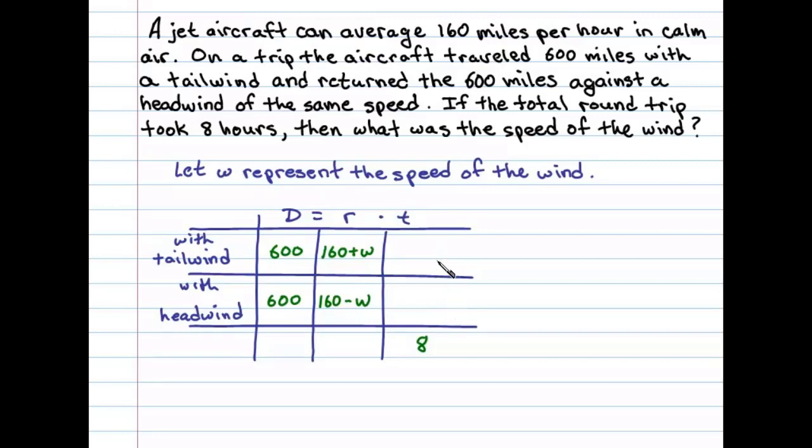Now, to get these times, we'll use the fact that distance equals rate times time, and then we'll divide both sides by the rate. If we do that, we can say distance divided by the rate equals the time. So, in this particular case, we can say the distance traveled with a tailwind, 600 miles divided by the rate, 160 plus W, will be the time spent traveling with a tailwind.